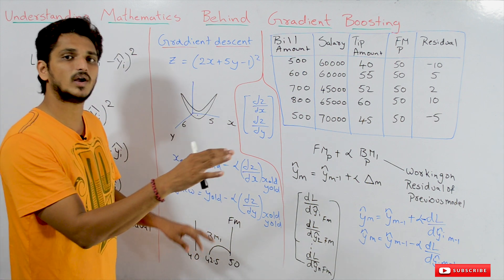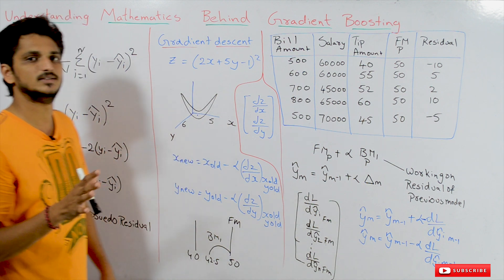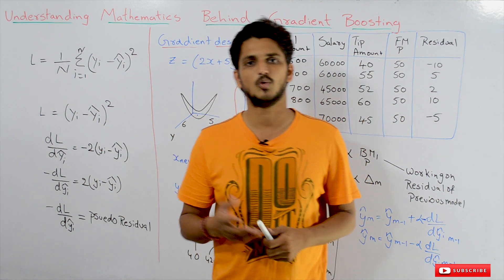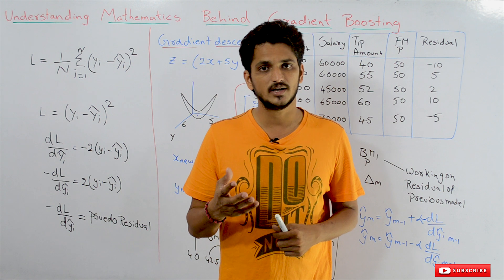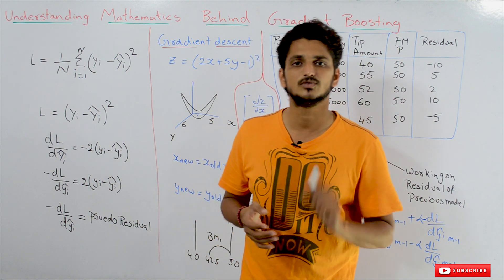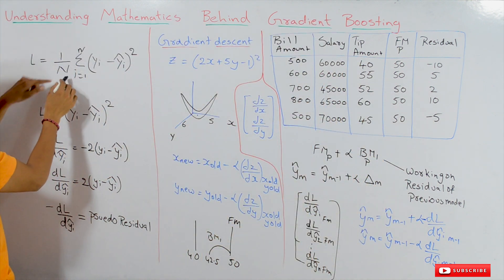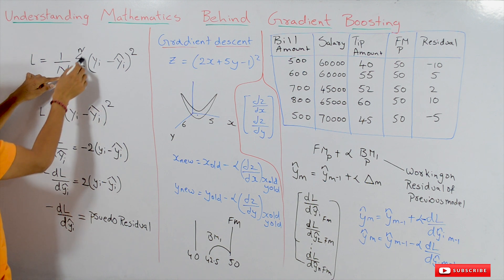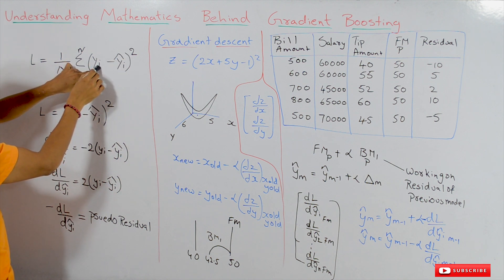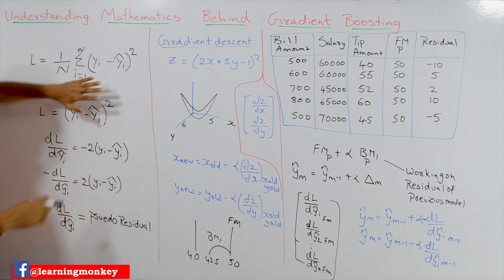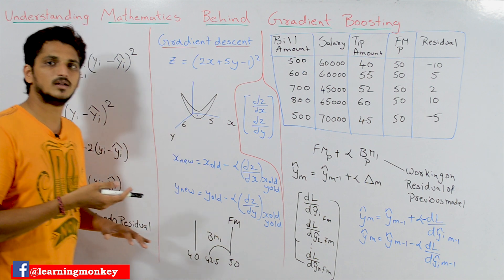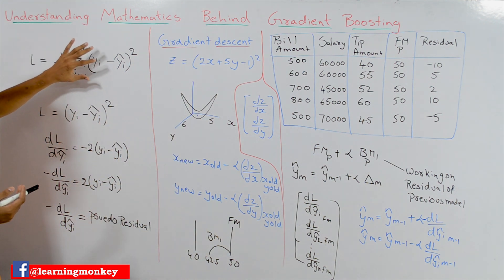Before going into the class, we have to understand what pseudo residual is. Coming to how we calculate accuracy in regression models — we can use many functions, and one we discussed previously is the mean squared loss function. L is equal to 1 by n, where n means number of data points, sigma i equals 1 to n of Yi minus Yi-hat whole square. Yi means actual value minus predicted value whole square. This is the mean squared loss function used in linear regression, and the same loss function we use in gradient boosting also.